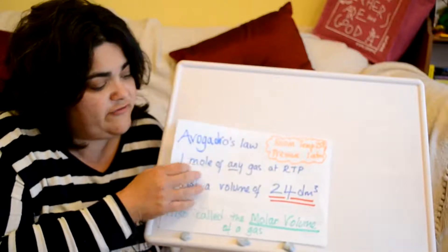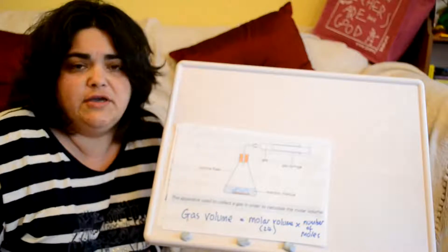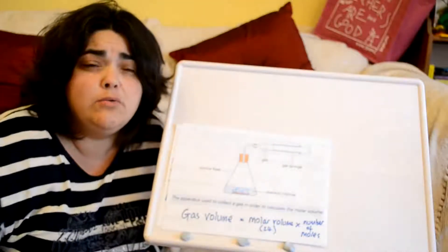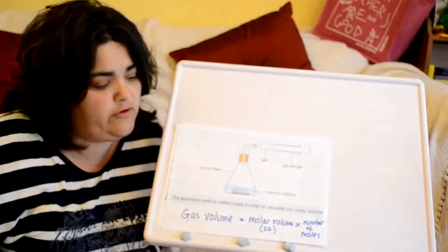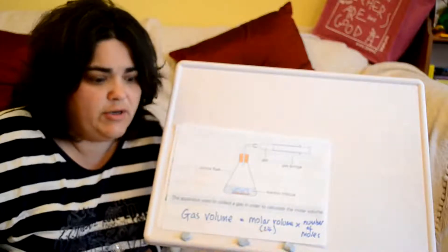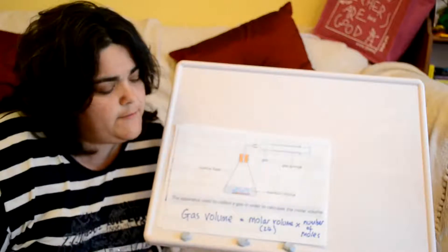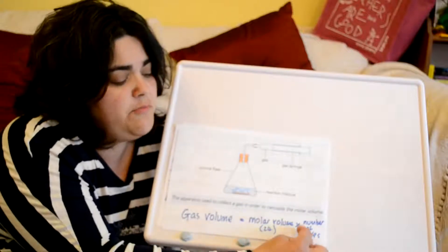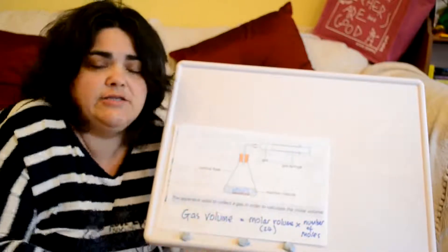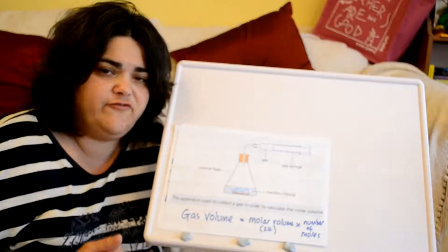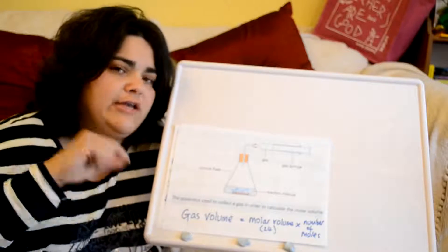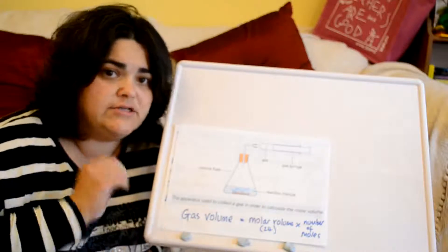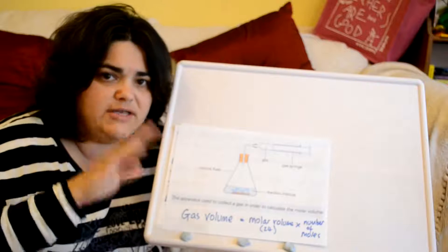We can use the molar volume — as long as we're at room temperature and pressure — to find out how many moles are in a particular volume of gas we collect. The equation is: gas volume equals the molar volume (always 24 dm³) times the number of moles. We can rearrange that to find what we need.